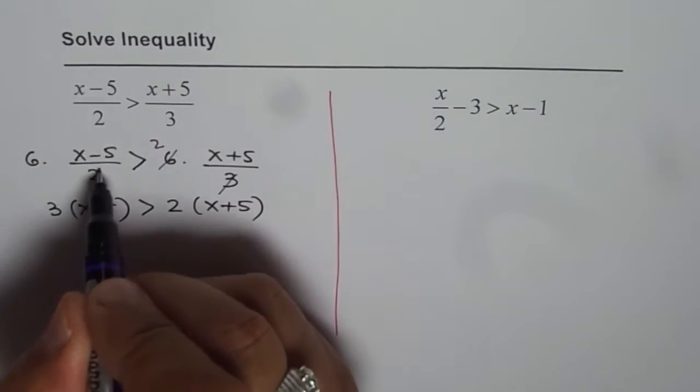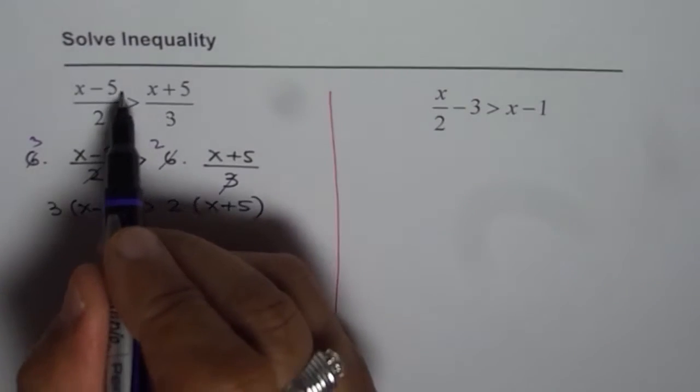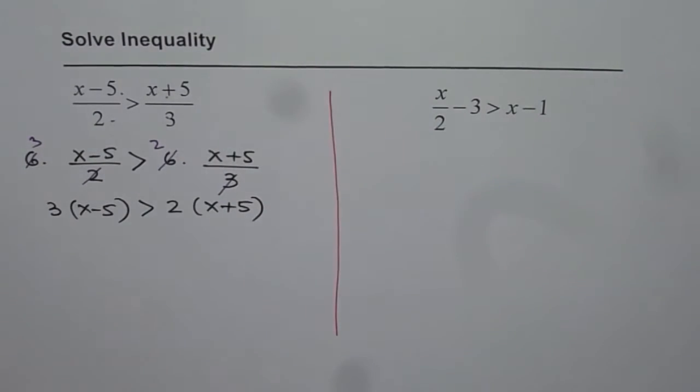So we get 2 times here and 3 times here. It is kind of cross multiply, right? So that is what you can observe and at times you can simply cross multiply and continue.